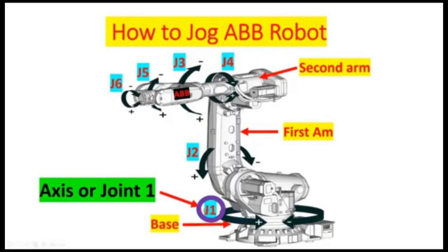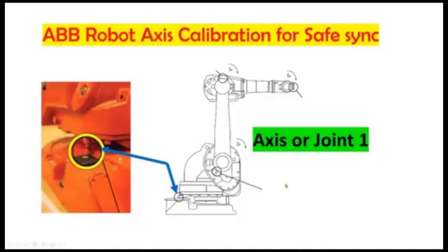And these are joint one, joint two, joint three, joint four, joint five, and joint six. This is axis number one, and this is the mechanical drawing showing the location of axis number one.